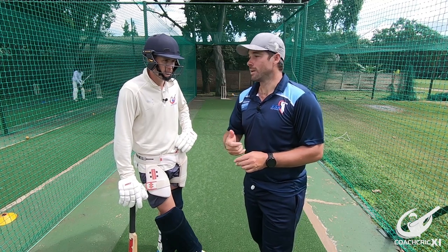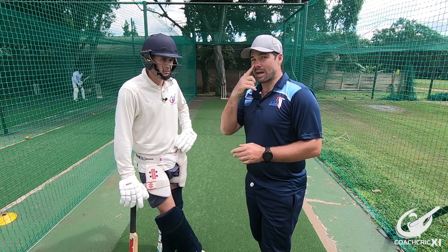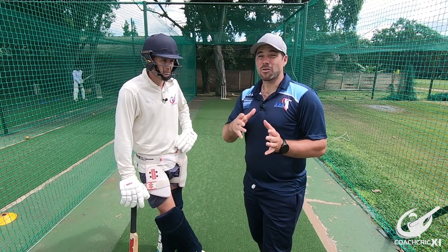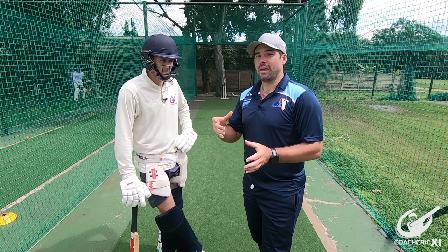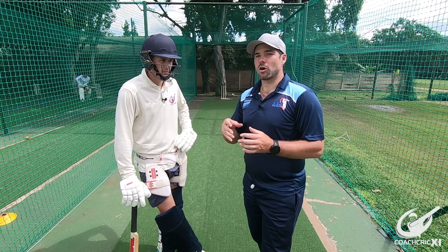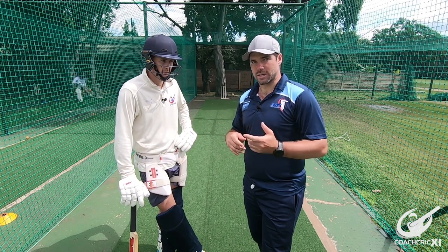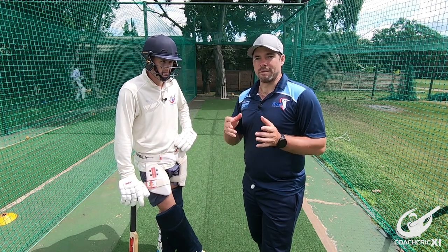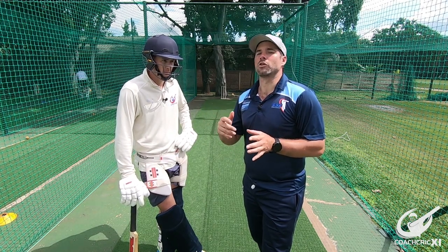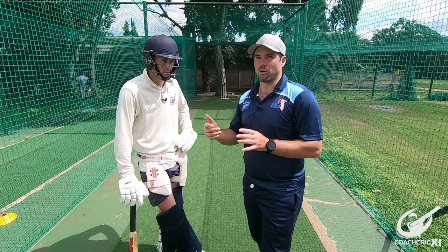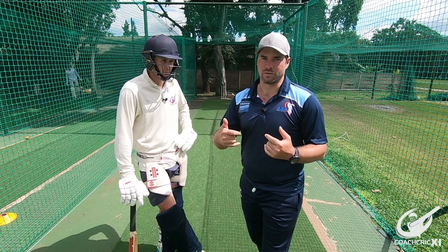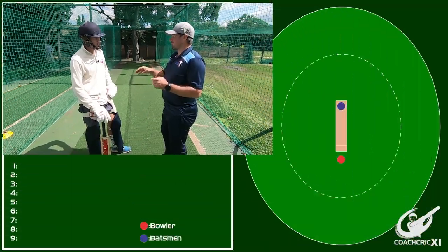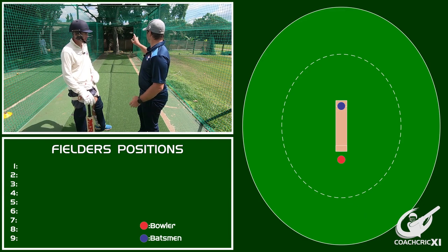We're going to accomplish this by me throwing off-spin with the overarm action. Zenon's going to be batting. I'm going to give Zenon a field placement — he is first going to start by looking to rotate, and then after that we are going to start looking at boundary options, taking maybe a little bit more risk in the shots.